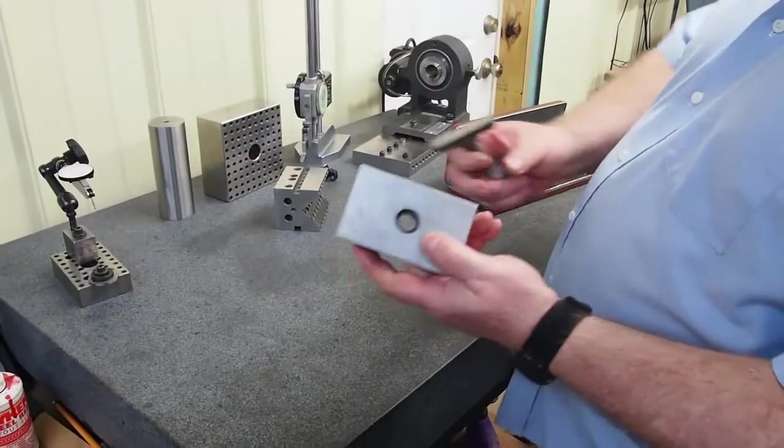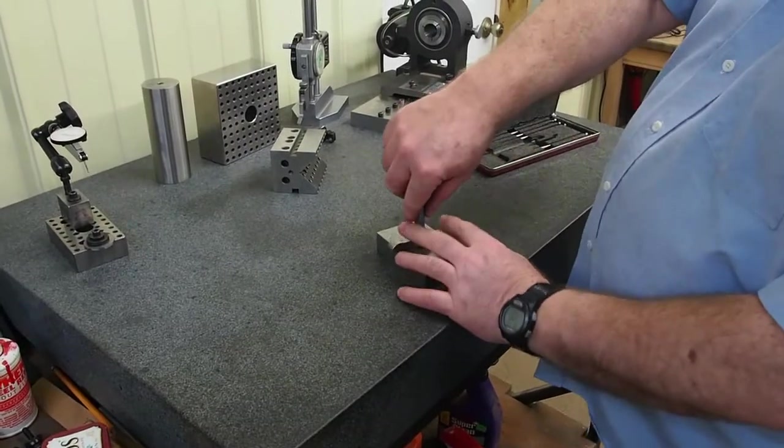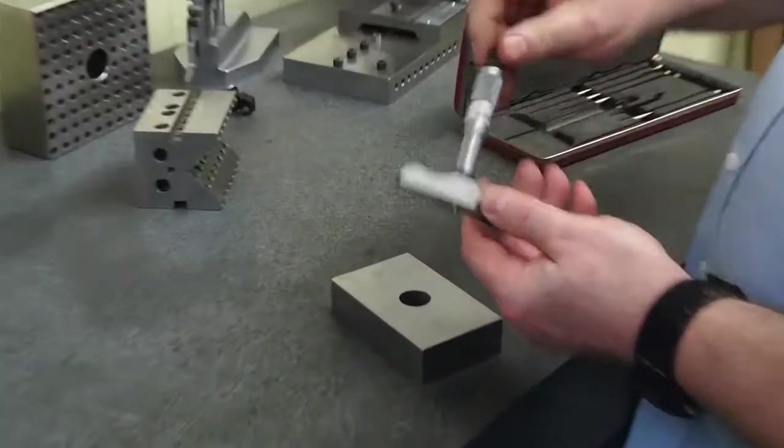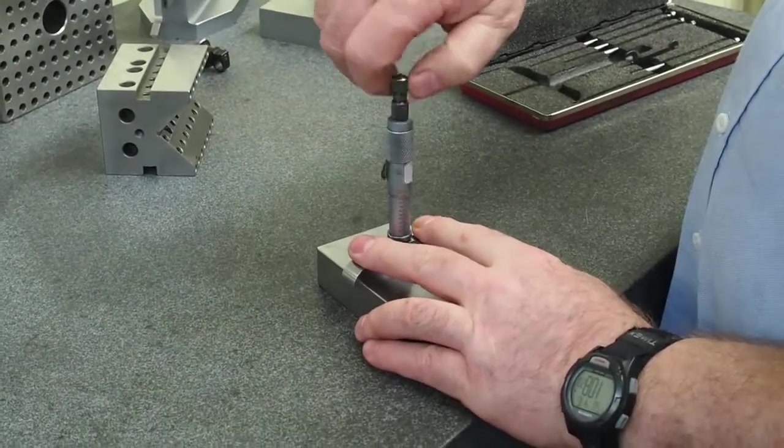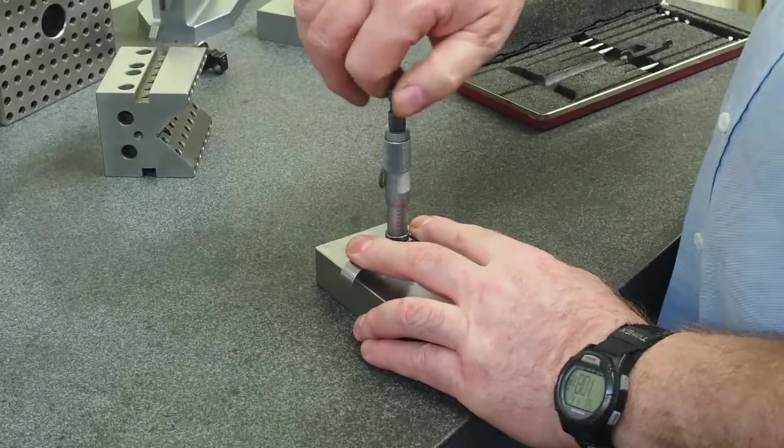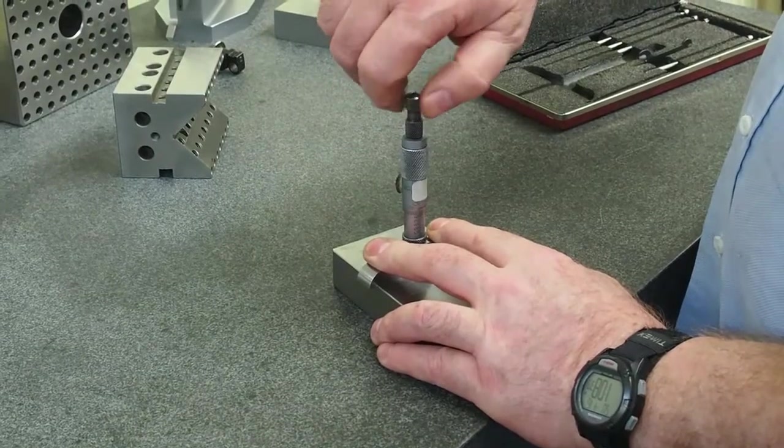Anyways, if you take something like this and you want to measure a counterbore depth, you would set this down. You'd spin this barrel, a little pin will come out to the side there, and the mic is set right. You can come down until it hits, bottoms out, hit the friction,